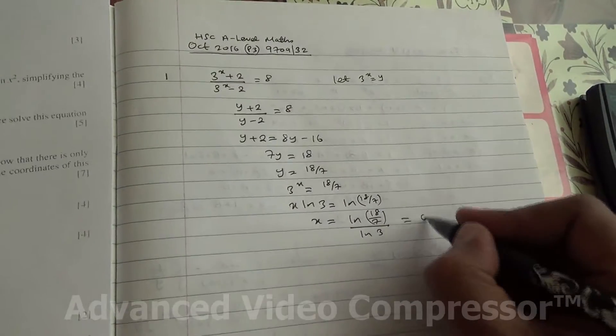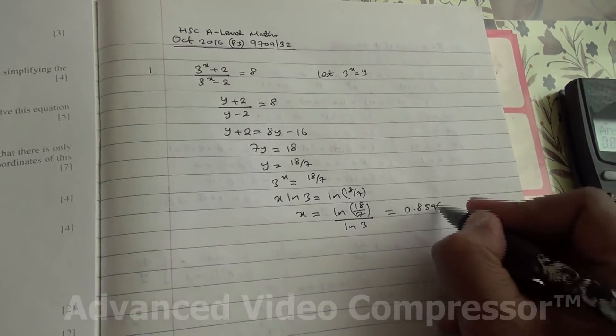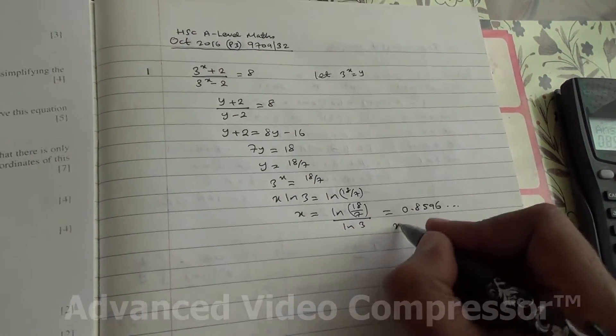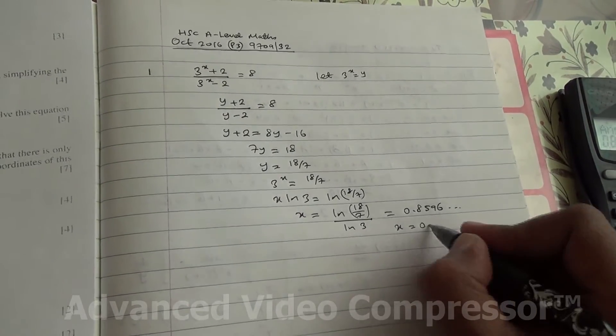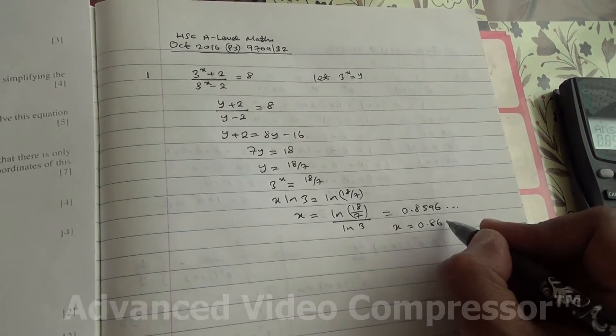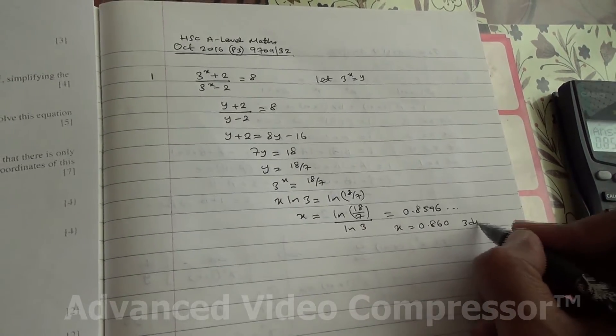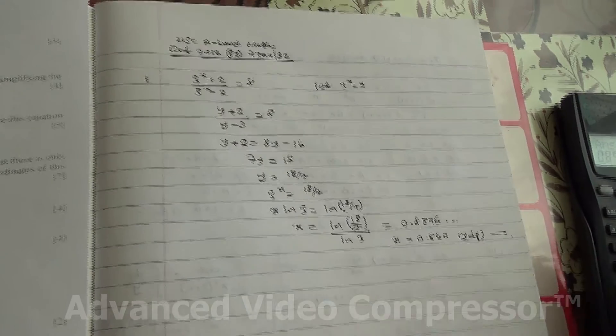So 0.8596 and so on. We have to give the answer correct to 3 decimal places. So we're going to say 0.860 to 3 decimal places. Here we are for this question.